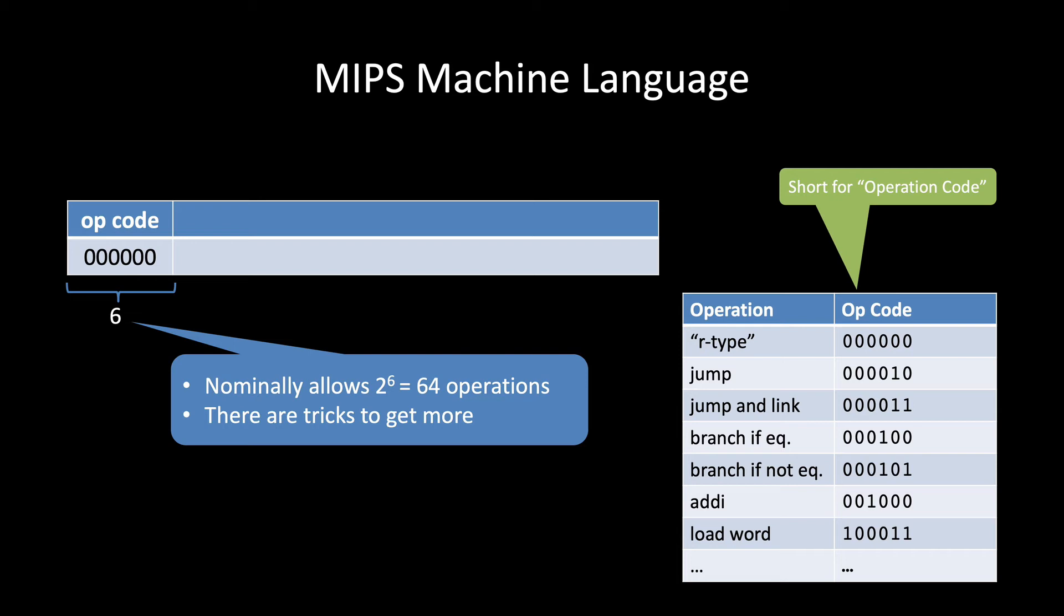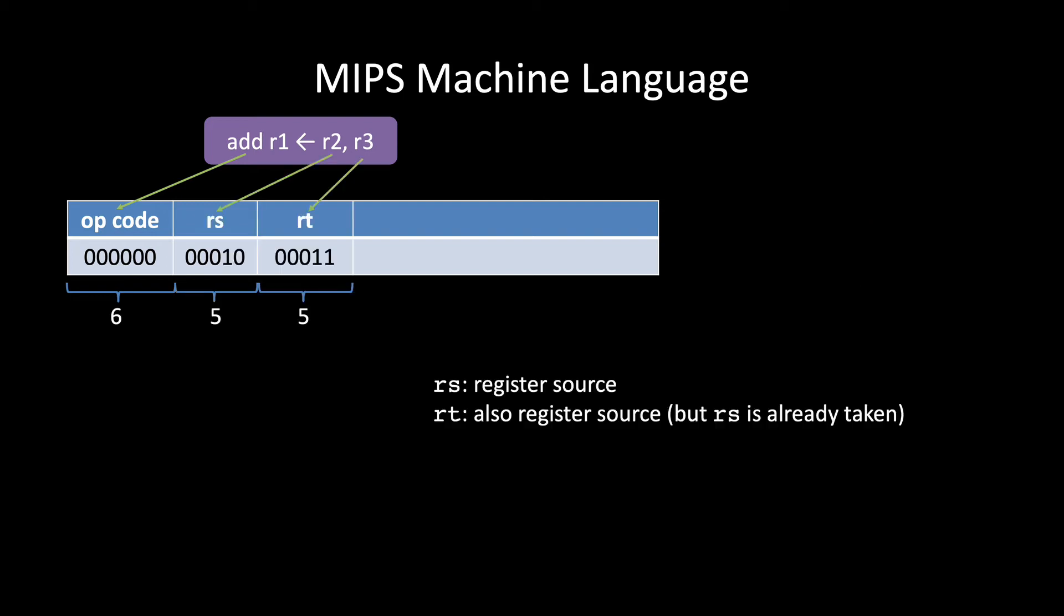For this video, we're going to focus specifically on instructions like this one that do basic arithmetic or logic. Add, subtract, and, or, that type of thing. So for this instruction, the next thing the CPU needs to know is where the data is. In this case, the data is stored in the registers. Since the CPU has 32 registers, we need log 32 or 5 bits to specify which register we want. Similarly, we use the next group of 5 bits to specify which register should be updated with the results of the addition.